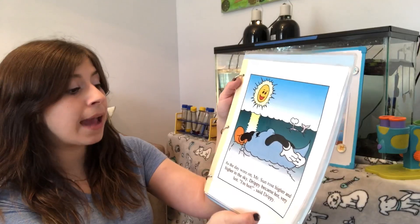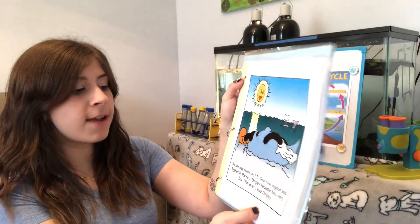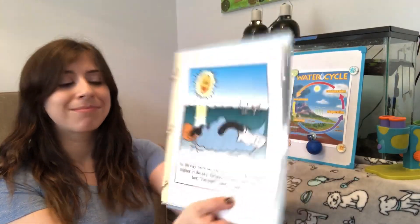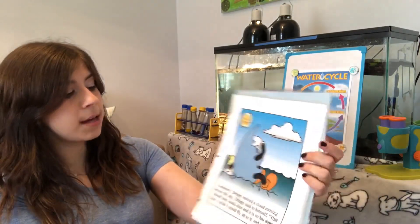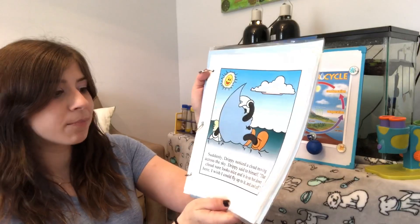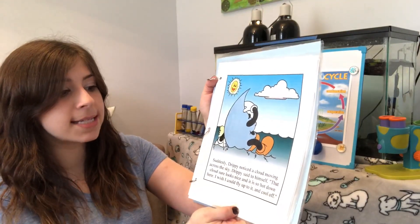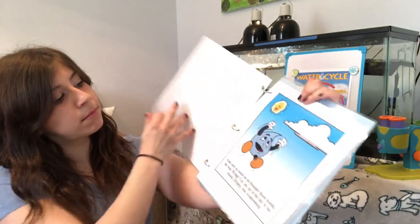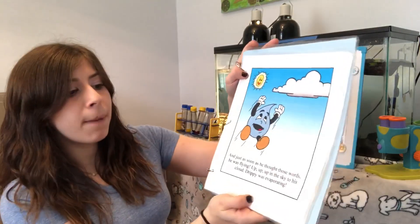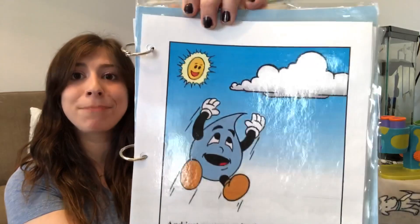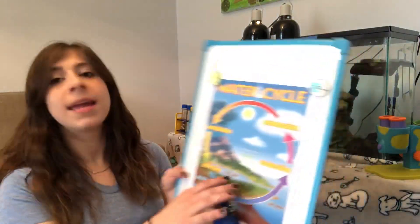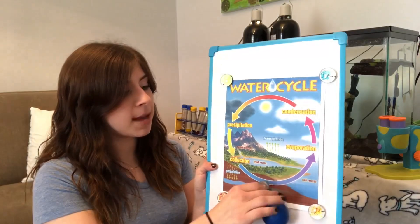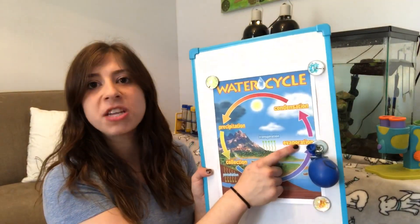As the day wore on, Mr. Sun rose higher and higher in the sky. Drippy became hot — very hot. 'I'm hot!' said Drippy. Suddenly Drippy noticed a cloud moving across the sky. 'That cloud sure looks nice and it is so hot down here — I wish I could fly up to it and cool off!' And just like that, he was flying up, up, up in the sky to the cloud. Drippy was evaporating! That is our first water cycle word: evaporation. Can you guys say that at home? Evaporation — nice job!